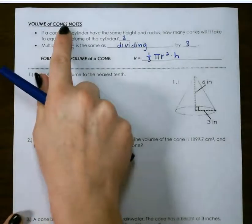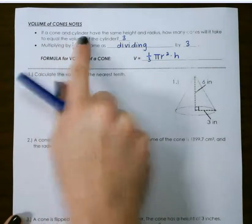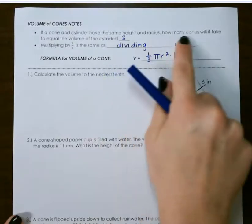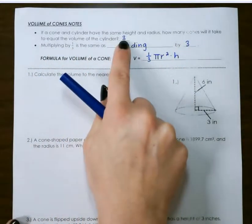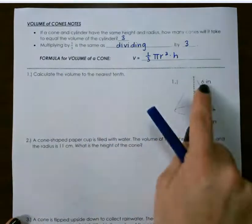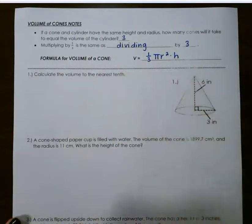Finding the volume of a cone. If a cone and a cylinder have the same height and the same radius, how many cones will it take to equal the volume of the cylinder? That would be 3. So I could fit 3 cones into a cylinder with the same height and the same radius.